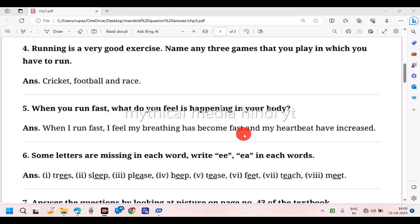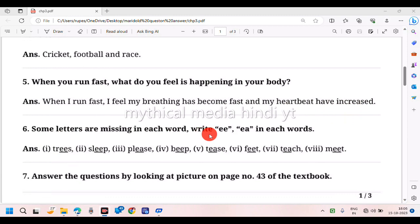Question six: Some letters are missing in each word. Write double E, EA in each word: trees, sleep, please, bee, cheese, feed, teach, meat.